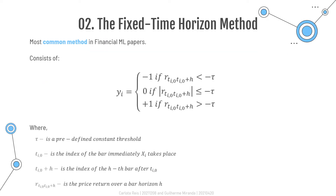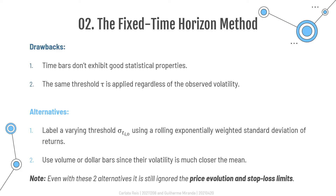Starting with the fixed time horizon method, which is the most used method in machine learning papers, this consists of labeling each row of matrix X with the values minus 1, 0, or 1, conditional on the value of the price return over a bar horizon H. This value is compared to a predefined fixed threshold TAL. Despite being very popular, the fixed time horizon method has several drawbacks that must be considered and may be reasons to avoid this approach in most cases.